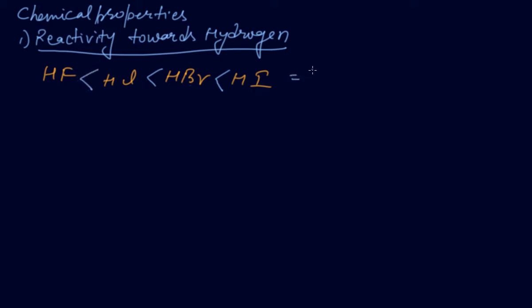This is based on bond dissociation enthalpy. In terms of electronegativity, HF is a stronger acid because the electronegativity of fluorine is high. They all react with hydrogen to give hydrogen halides, and acidic strength follows this order. Number two: reactivity towards oxygen.